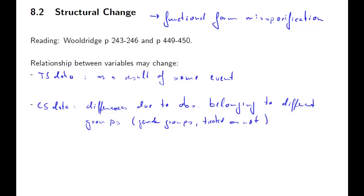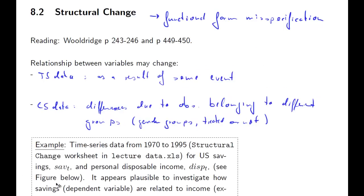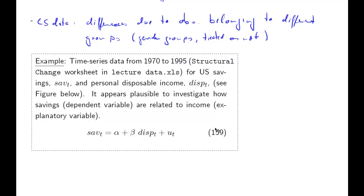Now the following example we're going to use: Let's assume we have time series data, you can get them from the lecture data spreadsheet, and try this yourself. We are thinking of a relationship between savings at time t, that's US data, that's macro data, savings and disposable income. Clearly we would expect that to be some sort of positive relationship, a very Keynesian theory of savings.